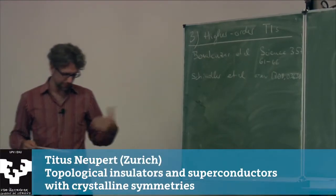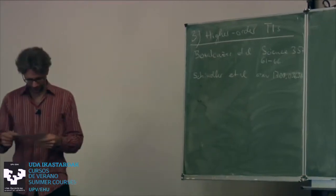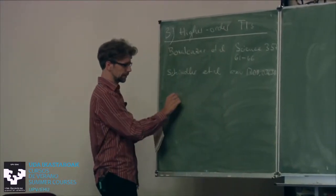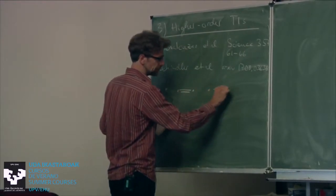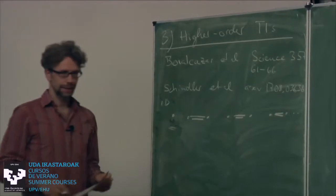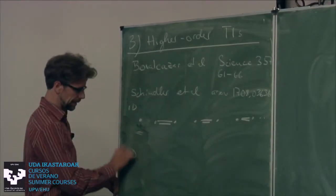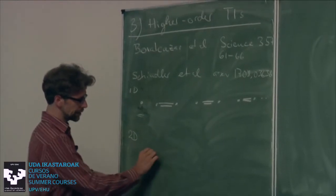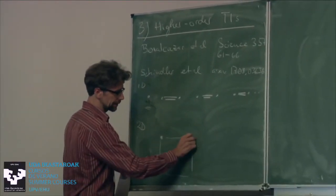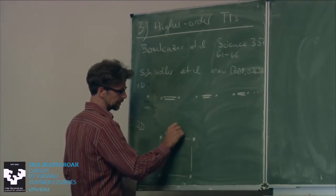The basic idea is: can we bring the bulk-boundary correspondence of topological phases to a slightly different level? The simplest place to start is the Su-Schrieffer-Heeger model — a tight-binding chain with an end state in 1D. The question is: in a 2D system, could we have a situation where the bulk is gapped, the edge is gapped, but we have a gapless state at the corner — a topological corner state?